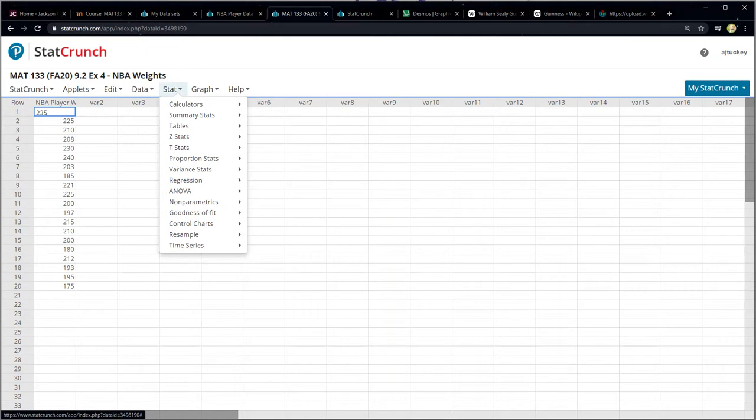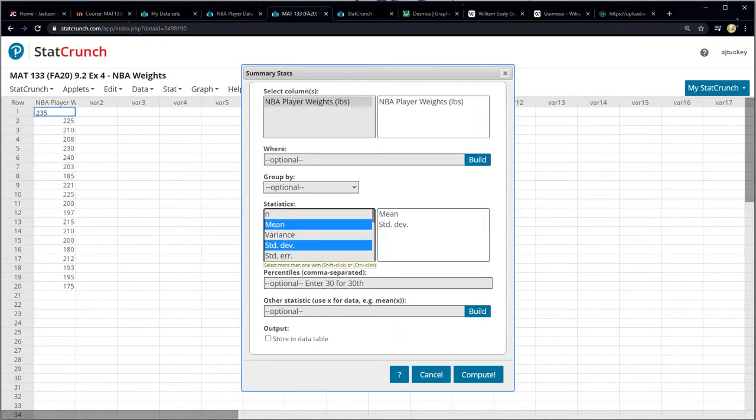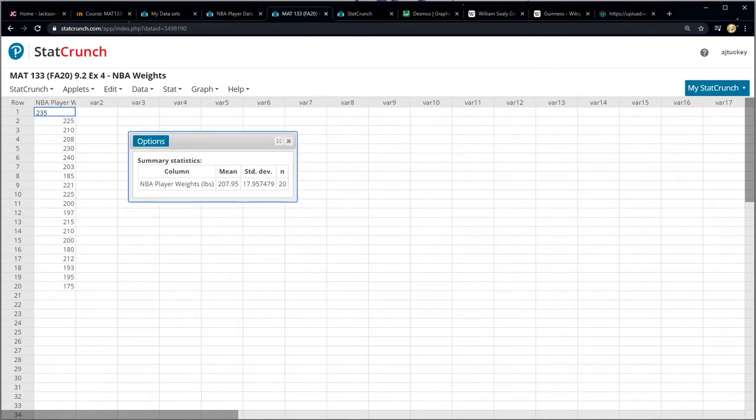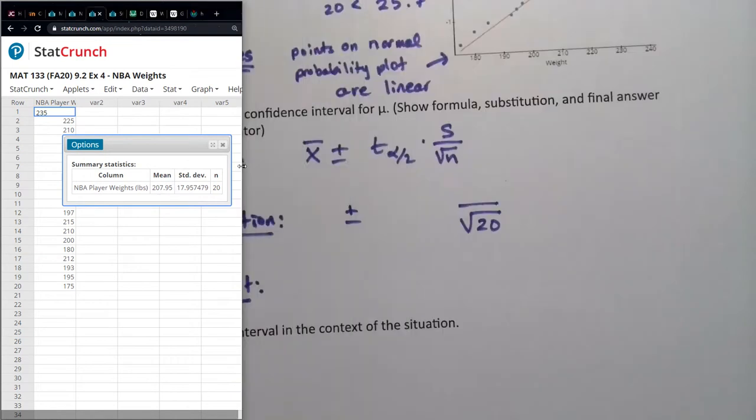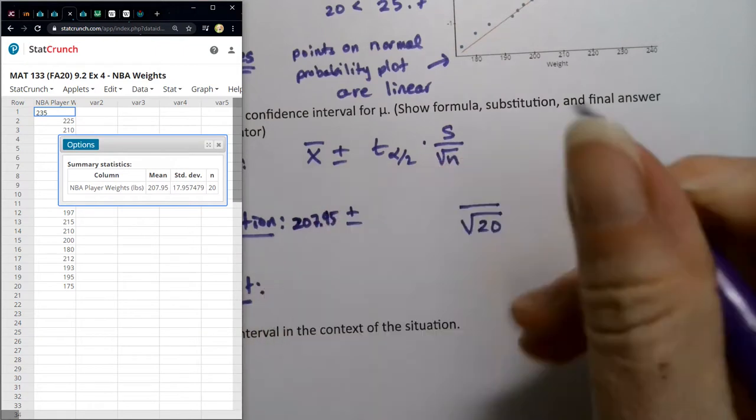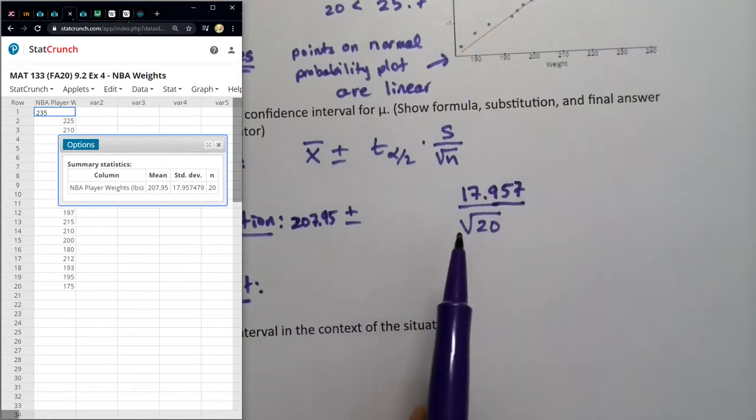So I have them right here. Do you remember how to find summary statistics? You go to Stat, Summary, Stat, Columns, and click on Columns. Then you say I want NBA player weights. I really just need the mean, the standard deviation, the n. I'm going to grab those three things by holding down my control button while I clicked on the three things that I wanted. I click Compute and there we have it. The x bar is 207.95, the s is 17.957. So here this is 207.95, this is 17.957. That gave me two of them and verified I was correct, n is 20.